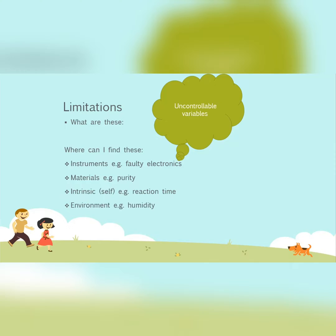Then there are environmental things — humidity could affect your experiment, or the presence of dust particles in the air. So there are four places to find limitations: your instruments, your materials, yourself (intrinsic factors), and the environment. When doing your experiment, ask: is there something wrong with the instrument, with the materials, with me, or with the environment that is limiting my results?